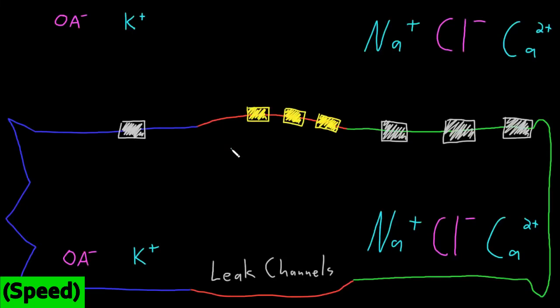In this video, I want to talk about how the neuron resting potential is created and how it relates to concentration differences in some of the important ions involved in neuron function. Understanding the concepts involved in the neuron resting potential will help us understand other neuron membrane potential changes like the graded potentials and the action potentials.